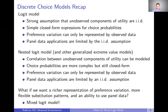Then we talked about the nested logit model as part of last week's discussion of generalized extreme value models. In this case, we allowed for some correlation between unobserved components of utility — we could group alternatives into nests to allow for correlations — and it added some flexibility to our representation of substitution patterns, but things were still pretty rigid compared to a fully flexible model. This gave us choice probabilities that are more complex but still closed form. However, it still has some of the same problems: preference variation can only be represented by observed data, and panel data applications are limited by an IID assumption. It's usually unreasonable to assume that someone is making independent choices over multiple time periods.